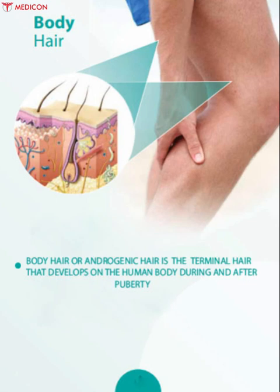Body hair, or androgenic hair, is a terminal hair that develops on the human body during and after puberty. Body hair keeps mammals warm and protects skin from external influences. There are two types of body hair: vellus hair and terminal hair. Vellus hair is short and thin hair found on your body, whereas terminal hair is long and thick hair found on your head, face, eyebrows, and pubic area.